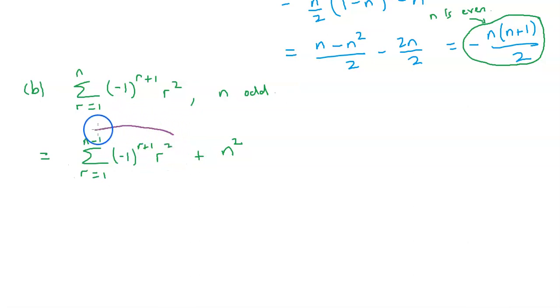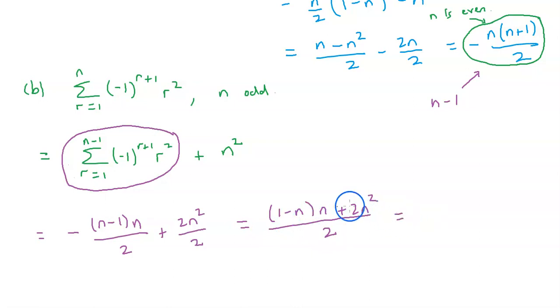From here it's pretty easy because this one we can figure out immediately by just sticking n minus 1 into here. That's going to give us negative n minus 1 times n minus 1 plus 1, which is n, divided by 2, and then plus n squared, which is the same as 2n squared divided by 2. That is 1 minus n times n plus 2n squared divided by 2, which looks like n plus n squared divided by 2, or we can write that as n times n plus 1 divided by 2.